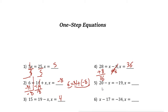Next: 20 minus x = negative 19. The number x must be bigger than 20 — specifically, 39. So 20 minus 39 equals negative 19. That number is 19 more than 20.